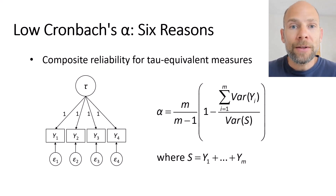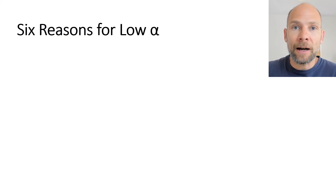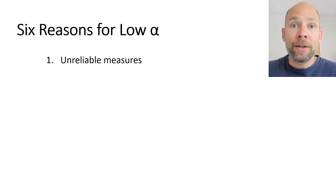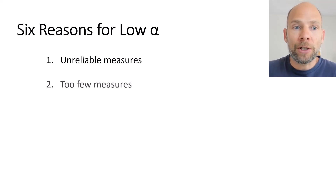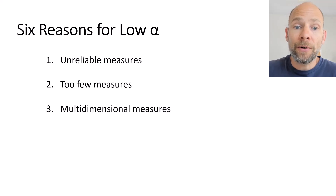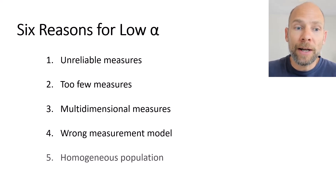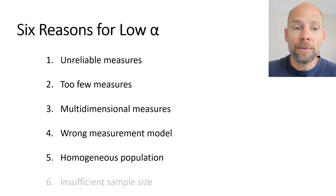Now let's talk about the six common reasons for obtaining an unsatisfactory or very low Cronbach's alpha. Number one: unreliable measures. Number two: too few measures. Number three: the measures are multidimensional. Number four: the measurement model is incorrect. Number five: a highly homogenous population. And number six: insufficient sample size.